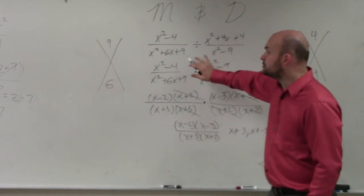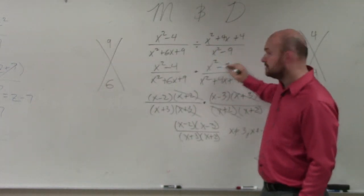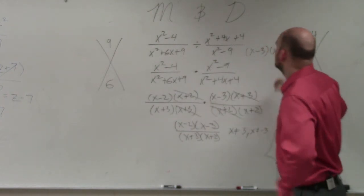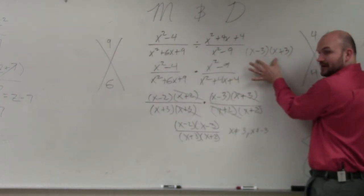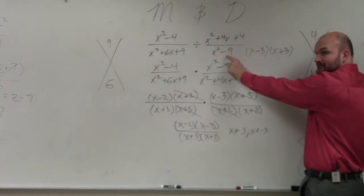From my original problem, those are the numbers that make my denominator equal to 0. So if you look at this factor, if x is 3, that becomes 0. 0 times that is 0. So your denominator is equal to 0.